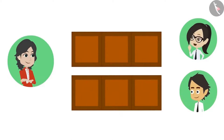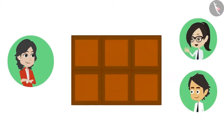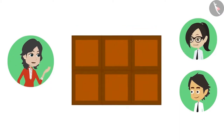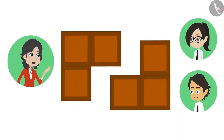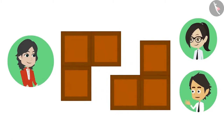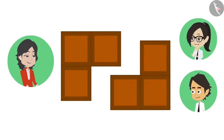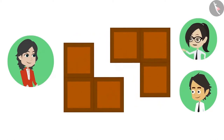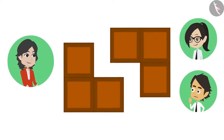Is there any other way to divide this chocolate in half? Look, Vandana, we can divide this into two equal parts like this. By using this way, we still have three pieces each. I did not think that we can divide into two equal parts this way. Then it can also be divided into two equal parts like this. Absolutely right, Vandana. This means that the same thing can be divided into halves in many ways.